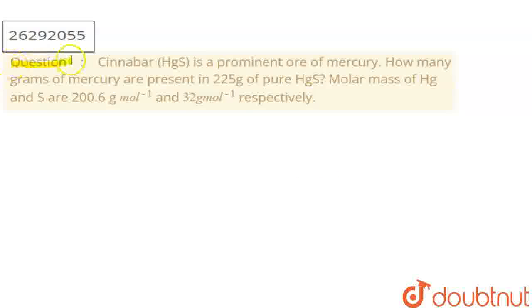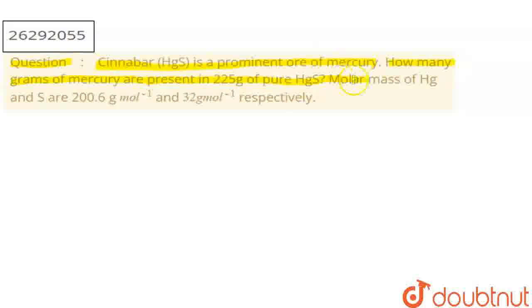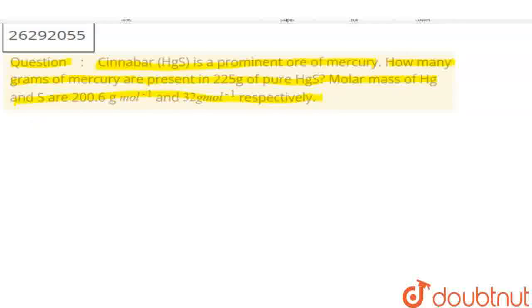Hello student. The question is that cinnabar, that is HgS, is a prominent ore of mercury. So, how many grams of mercury are present in 225 grams of pure HgS? If you have the molar mass of Hg and S given, the formula is HgS — which contains one mercury atom.